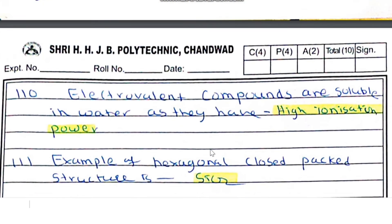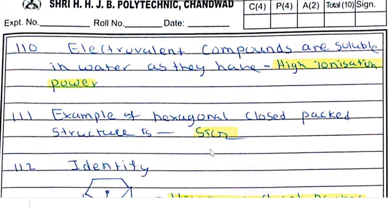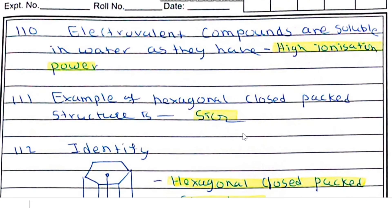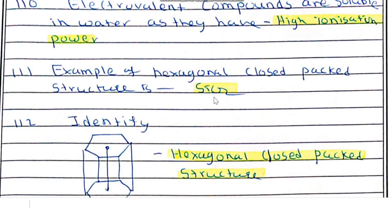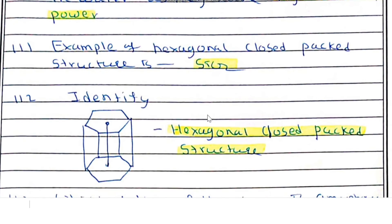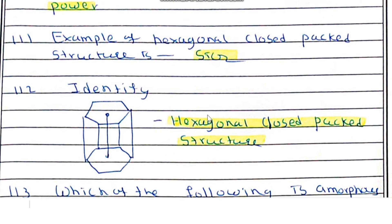Electrovalent compounds are soluble in water because they have high ionization power — ion formation is more prevalent in electrovalent compounds. An example of a hexagonal close-packed structure is SiO2.